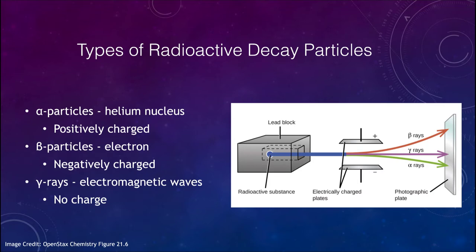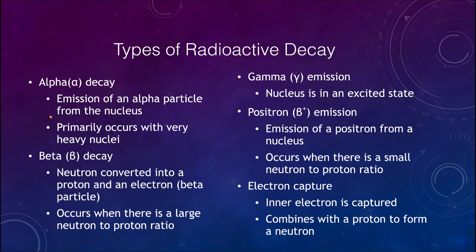Now we can look at the different types of radioactive decay. In alpha decay, an alpha particle — a helium nucleus — is emitted. It emits two protons and two neutrons as an alpha particle. This often happens with very heavy nuclei, as emitting alpha particles is one way to bring them down towards the region of stability.